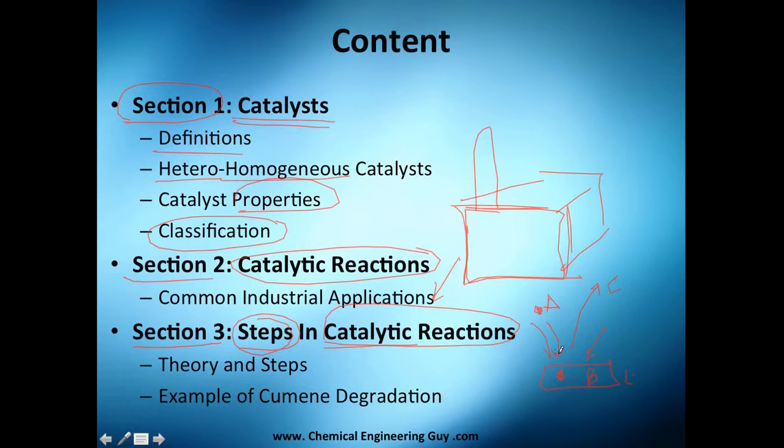How each step is going to determine our rate of reaction and essentially the speed or the time required to make that reaction. And then we're going to apply that theory to the example of cumene being transformed into propylene and benzene. So if you like the content guys, stick with it because we're going to start with section number one, catalysts, in the next video.